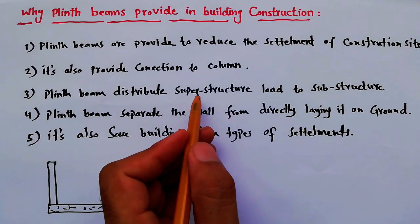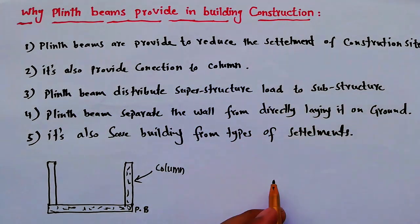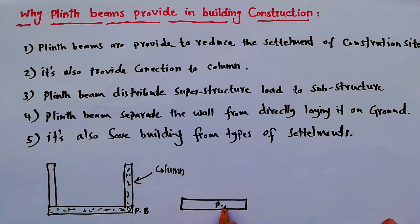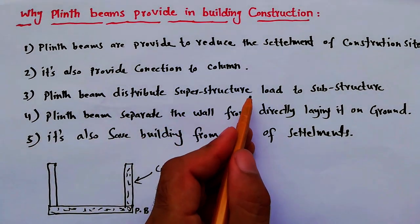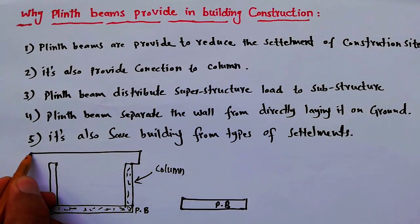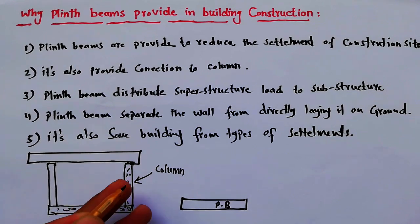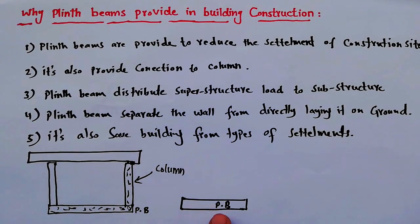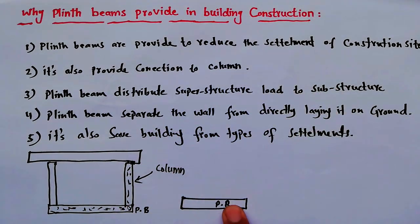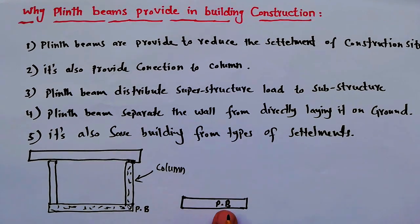Third point: the plinth beam distributes the superstructure load to the substructure. When we provide the plinth beam, the superstructure load — whether from a slab, brickwork, or wall — is distributed down to the substructure, which lies below the plinth beam.